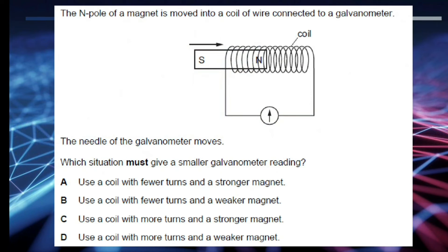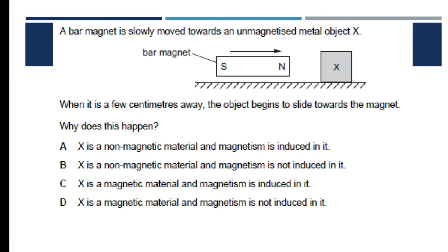Here are some sample questions from your board exam. First: the north pole of a magnet is moved into a coil of wire connected to a galvanometer — which situation gives a smaller galvanometer reading? The answer is B: use the coil with fewer turns and a weaker magnet. Second: a bar magnet is slowly moved towards a magnetized metal object X and it begins to slide towards the magnet — why? The answer is C: X is a magnetic material and magnetism is induced in it.